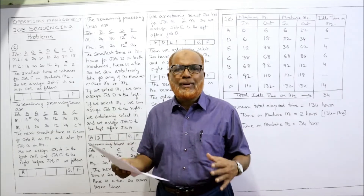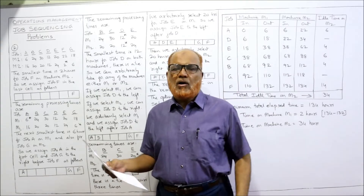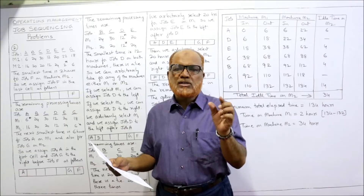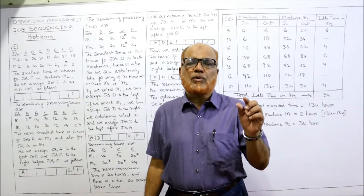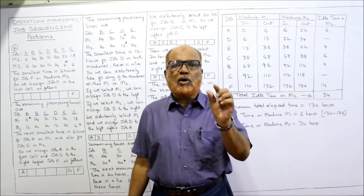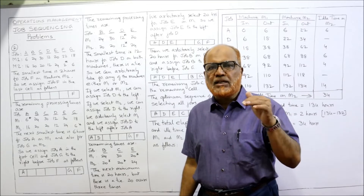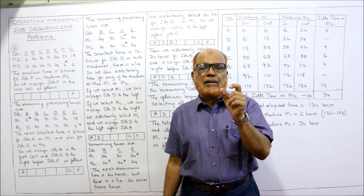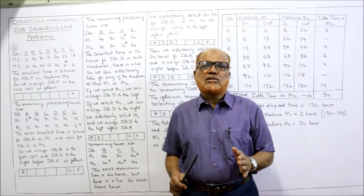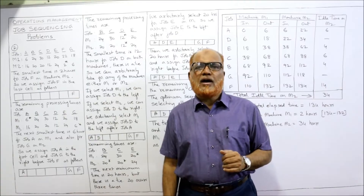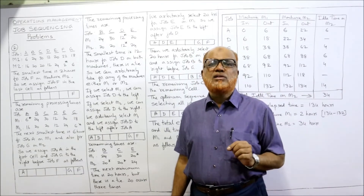We have to find the optimum sequence — which job should be done first and which job next. Our objective is to minimize the total time to finish all jobs. The Johnson-Bellman technique says: find the smallest processing time across all jobs. If the smallest time is on M1, assign that job from the left (first cell); if it is on M2, assign it from the right (last cell).